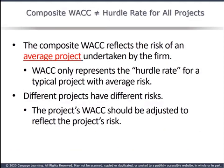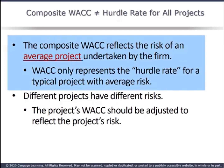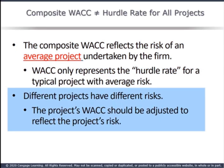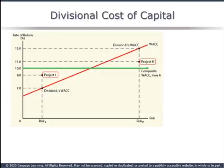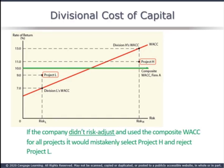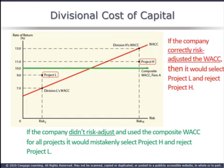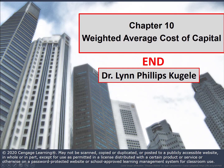You hear firms talk about their hurdle rate — the return that all projects must meet or beat to be accepted. But should the composite cost of capital be a hurdle rate? No. A firm's overall cost of capital reflects the required return on a project with the average risk of all the firm's projects. Different projects and different divisions have different risk, so the cost of capital needs to be adjusted. If the company didn't risk-adjust, it would mistakenly accept project H and reject project L. If the company uses a correctly risk-adjusted cost of capital, it would accept L and reject H. This ends our coverage of Chapter 10, The Weighted Average Cost of Capital.